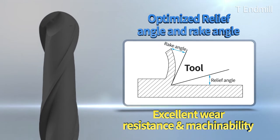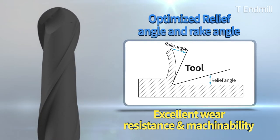With its optimized relief and rake angle, T and Mill series shows excellent wear resistance and machinability, ensuring stable cutting performance.